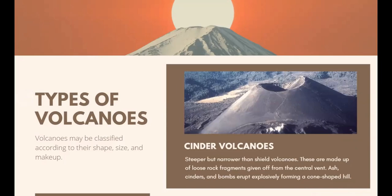Cinder cone volcanoes are steeper but narrower than shield volcanoes. They are made out of loose rock fragments from the central vent — ash, cinders, and bombs erupt explosively, forming a cone-shaped hill. Volcanic materials cool quickly, causing the sides to become steep. The lifespan of an active cinder cone volcano is short, and many are already extinct. As landforms, they easily erode. An example of a cinder cone volcano is Mount Etna.